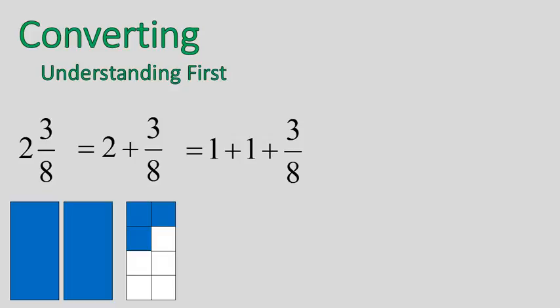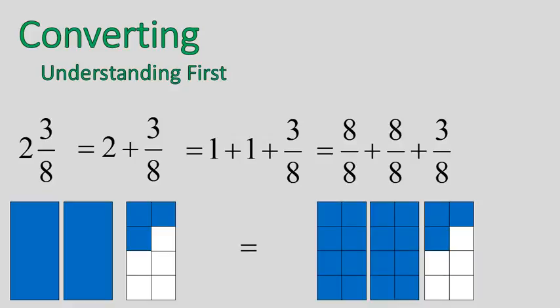Now, the other thing I could do, I could go one step further and say 1 plus 1 plus 3 eighths can instead be 8 eighths plus 8 eighths plus 3 eighths. Let me show you what that would look like visually, because this is the step that might be a little bit confusing. 8 eighths is the same thing as 1.